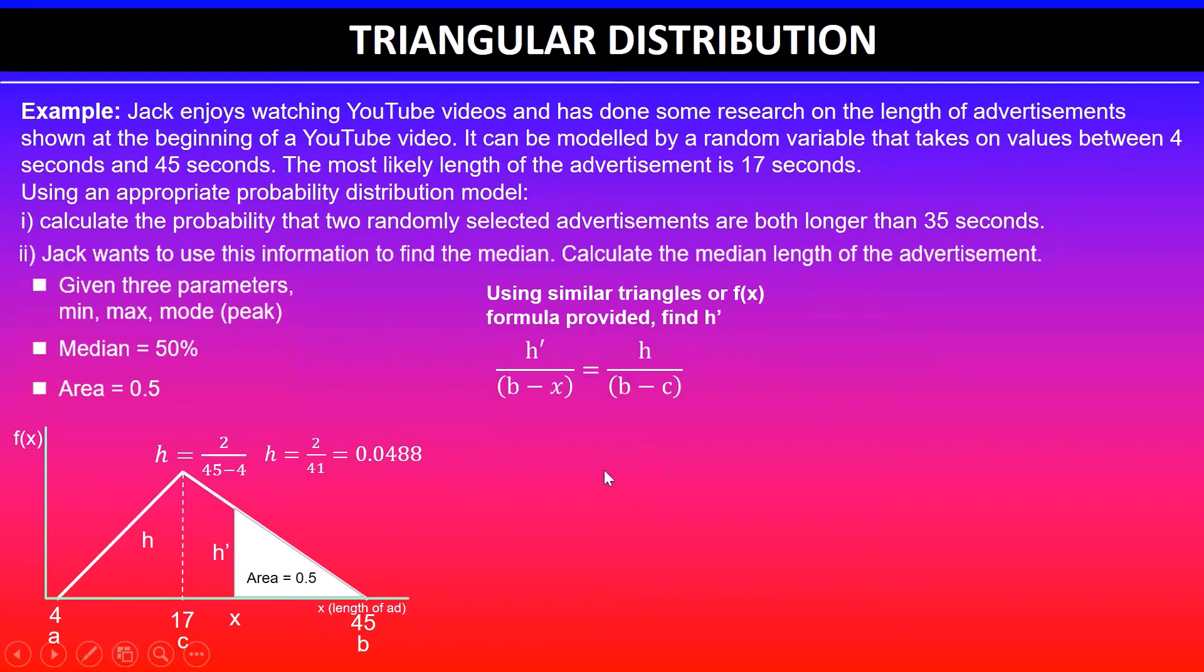You just need to set up your equation. So h' (height of the smaller triangle) divided by the base of the smaller triangle, which is b minus x, should be equal to the height of the bigger triangle (h) divided by the base of the bigger triangle, which is given by b minus c.